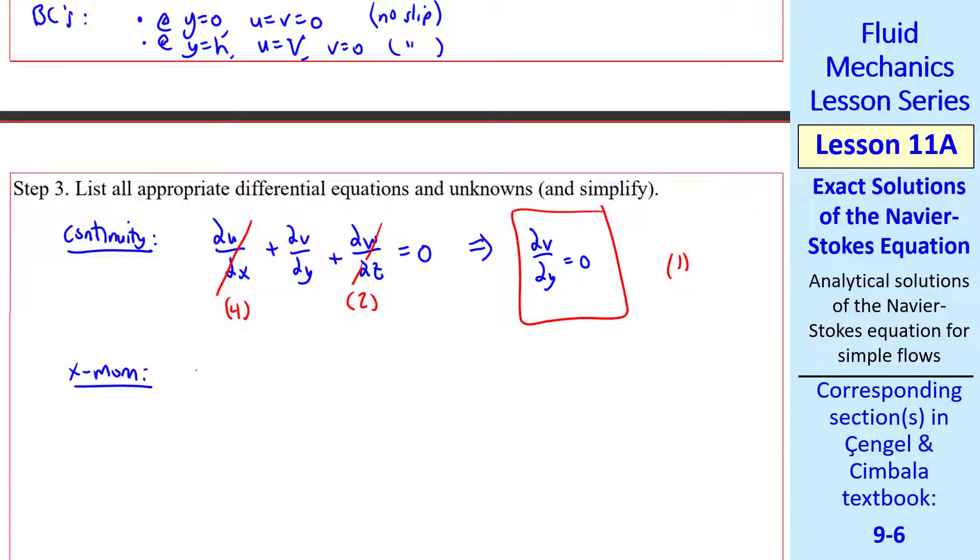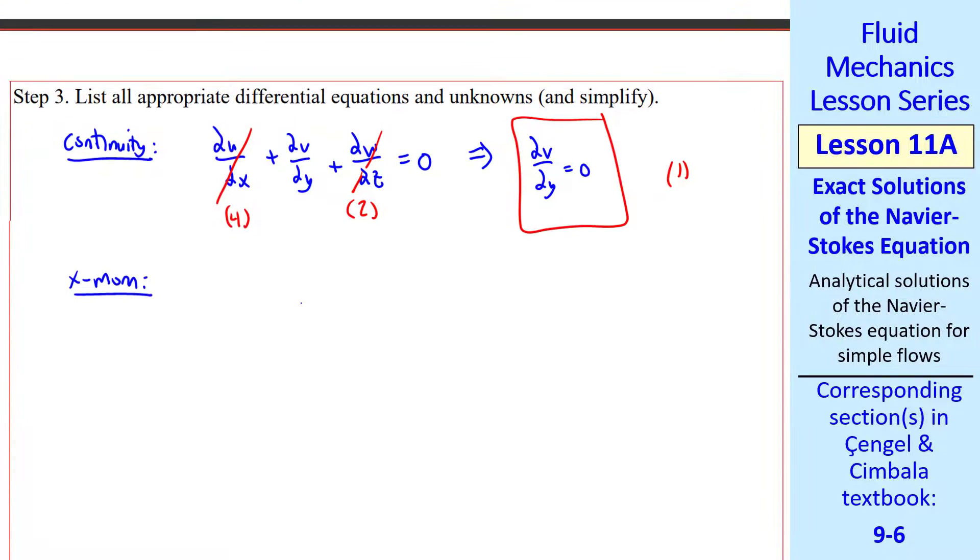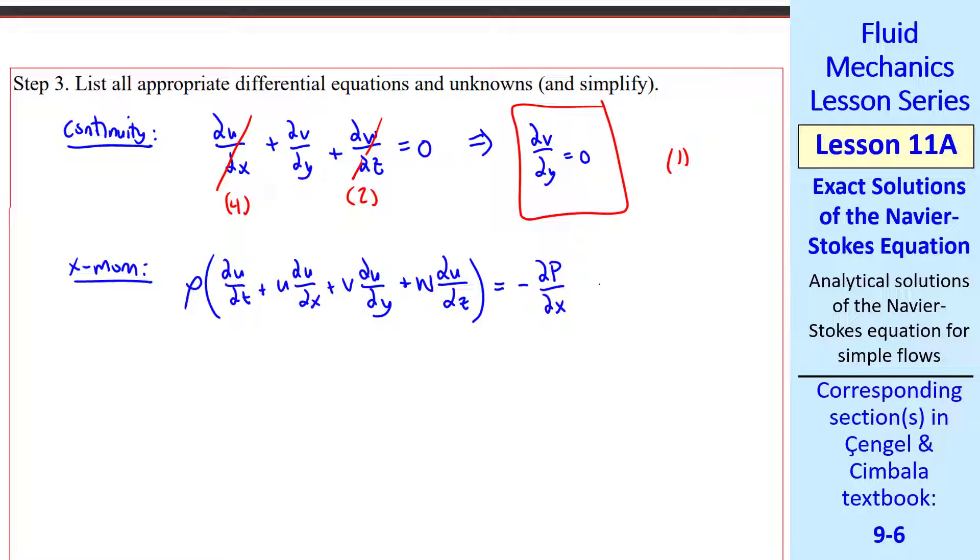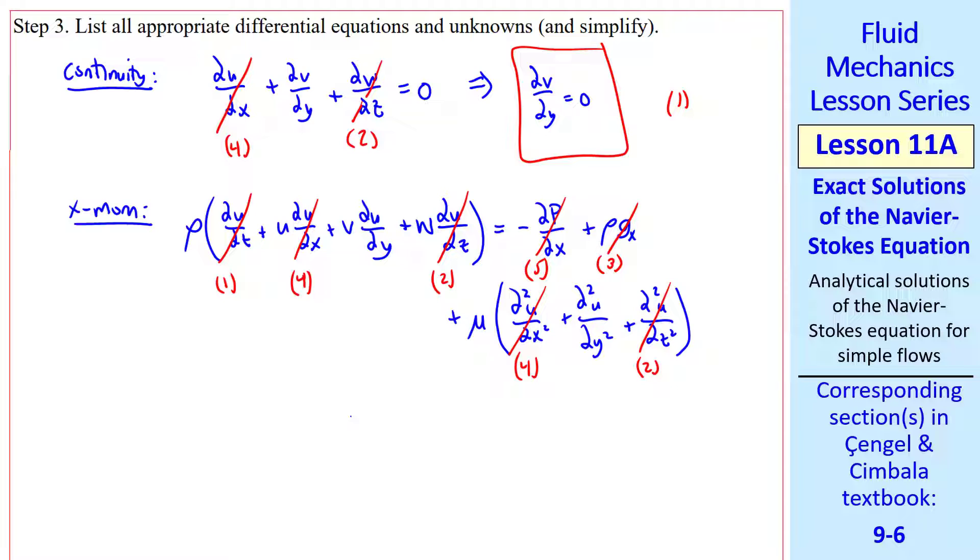Now let's look at x-momentum, the x-component of the Navier-Stokes equation. I write out the left-hand side, which equals the pressure term plus gravity plus viscous terms. Again I simplify. Flow is steady. Velocities don't change with x. It's 2D. Pressure is constant. No gravity effects. So this equation reduces to rho v del u del y equals mu del squared u del y squared. I'll call that equation two.